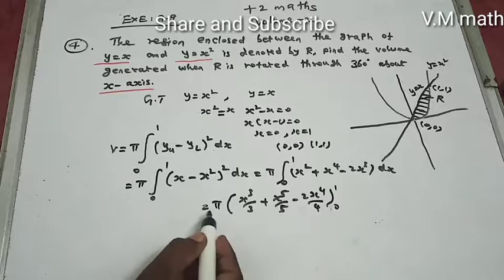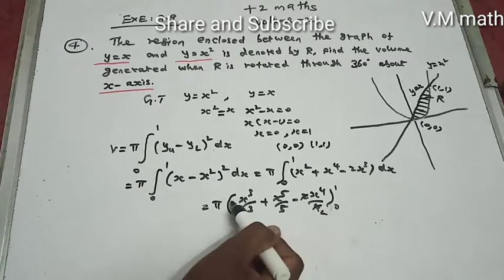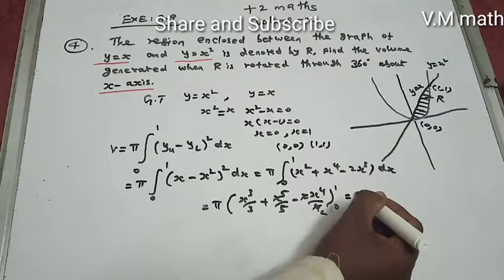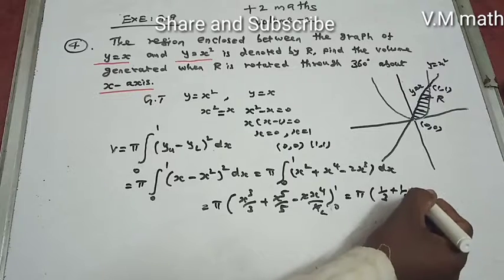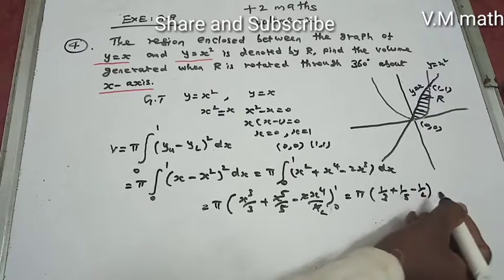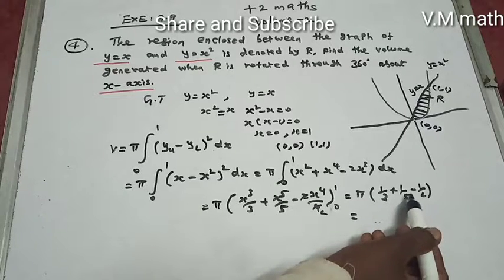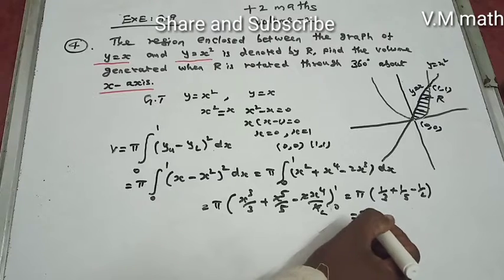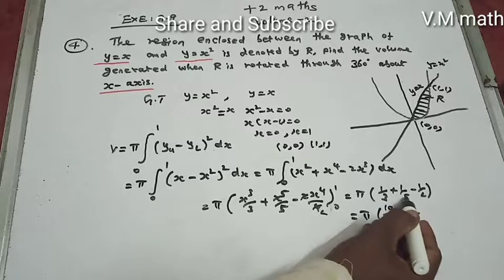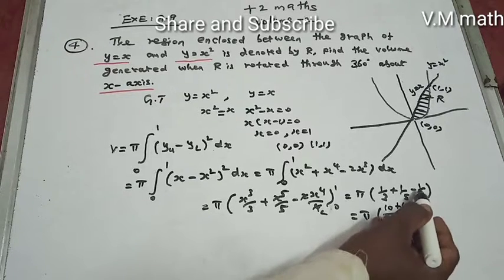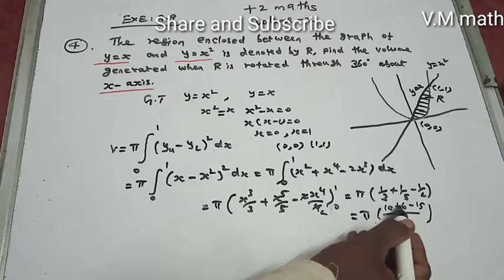The 2 times 1 cancels. Upper limit 1, lower limit is 0, so we get π times [1/3 plus 1/5 minus 1/2]. This equals π times [(10 + 6 - 15)/30], which is π times 1/30.